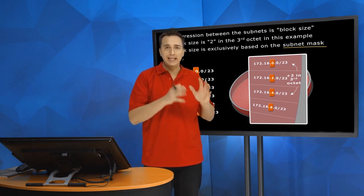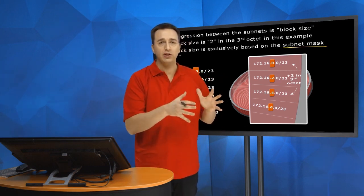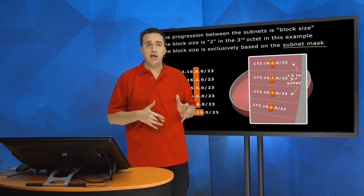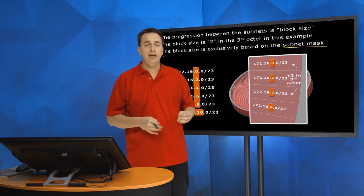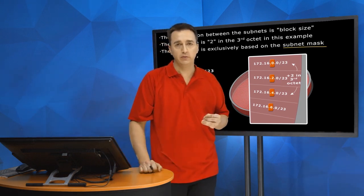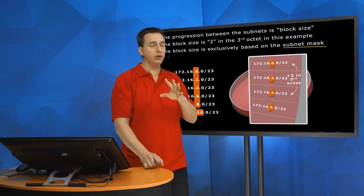So in this scenario, this is the progression because it's a slash 23. What we call this is the block size. So what is the size of our blocks here? Two? Did you say two? You're right.